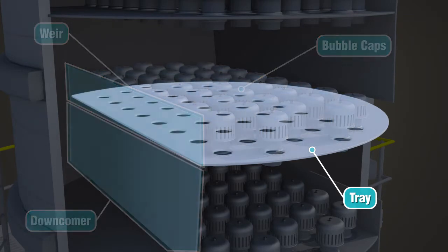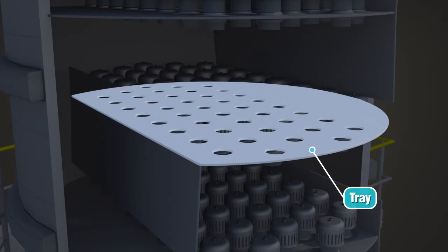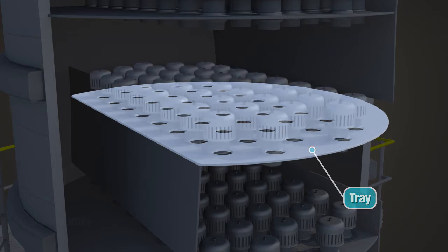The tray is a flat metal plate designed to promote contact between the liquids and vapors in the column. The tray is fitted with holes for the bubble caps.